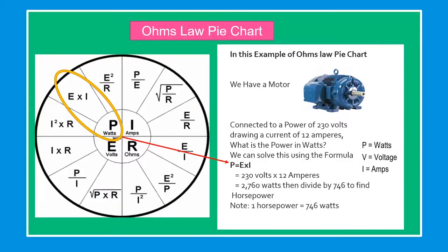Ohm's Law Pie Chart: In this example of Ohm's Law Pie Chart, we have a motor connected to a power of 230 volts, drawing a current of 12 amperes. What is the power in watts? We can solve this using formula P equals E times I, equals 230 volts times 12 amperes, equals 2760 watts, then divide by 746 to find the horsepower. Note that one horsepower is equal to 746 watts.